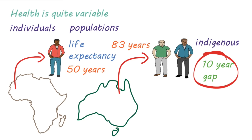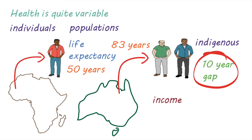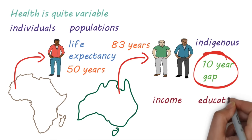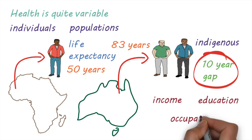Within a population, health is also influenced by social status. People with higher income, a higher level of education, and a better occupation have better health and a greater life expectancy.